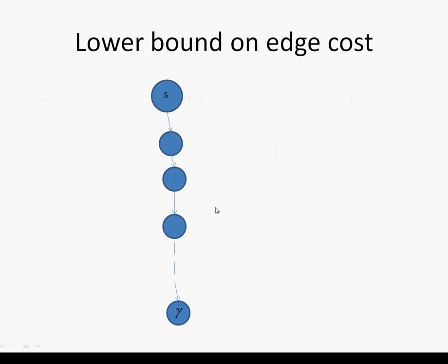The lower bound on edge cost — let me explain with an example. Let's say this is a finite path with a source and a goal node, and let's say the cost of this path is 2. But there can be a condition where we may never reach the goal node even if we follow the optimal path.